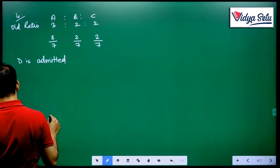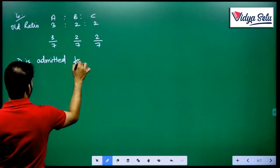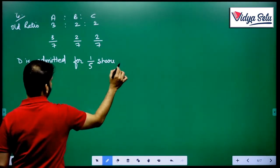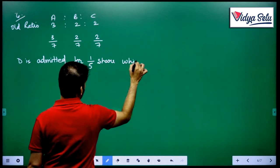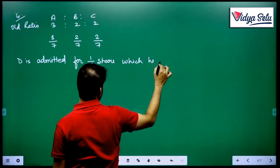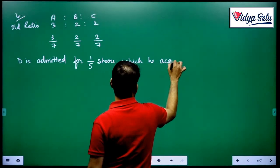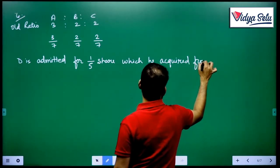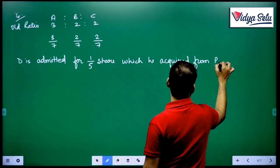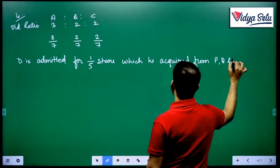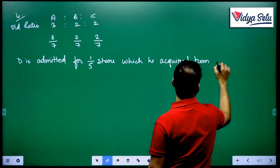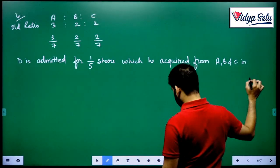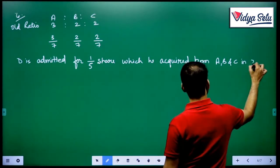D is admitted for one-fifth share, which he acquired from A, B and C in the ratio 2 to 2 to 1.